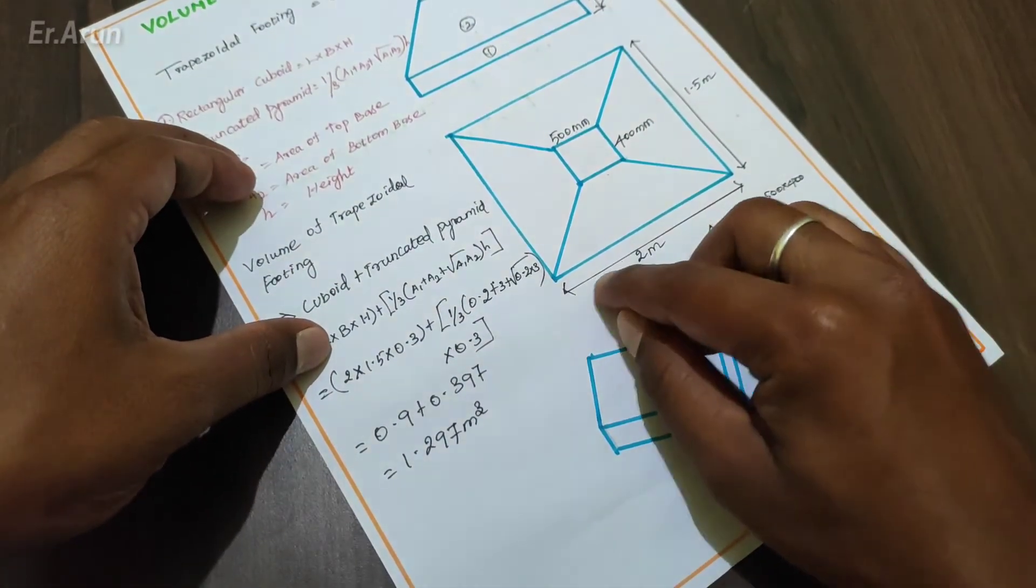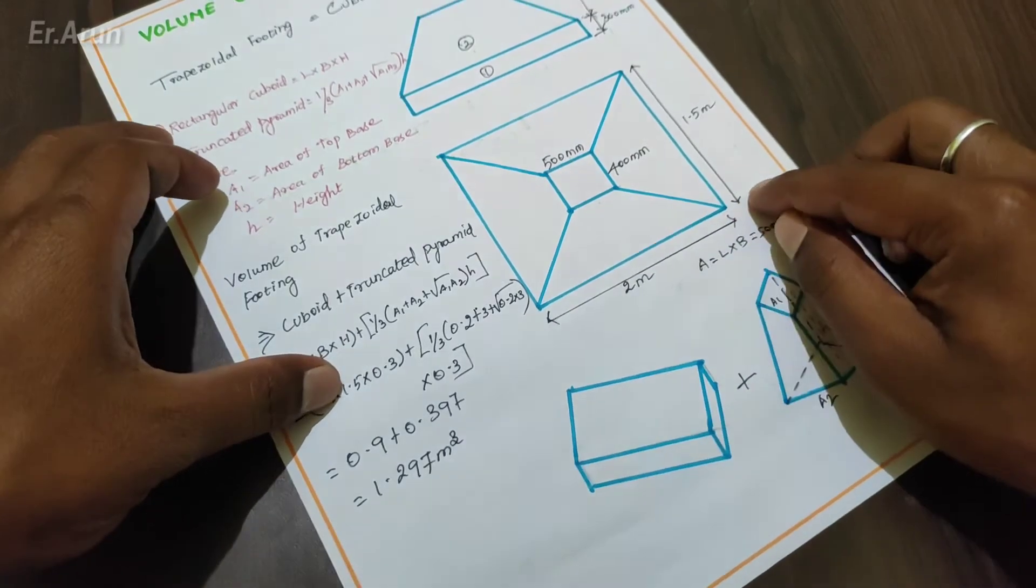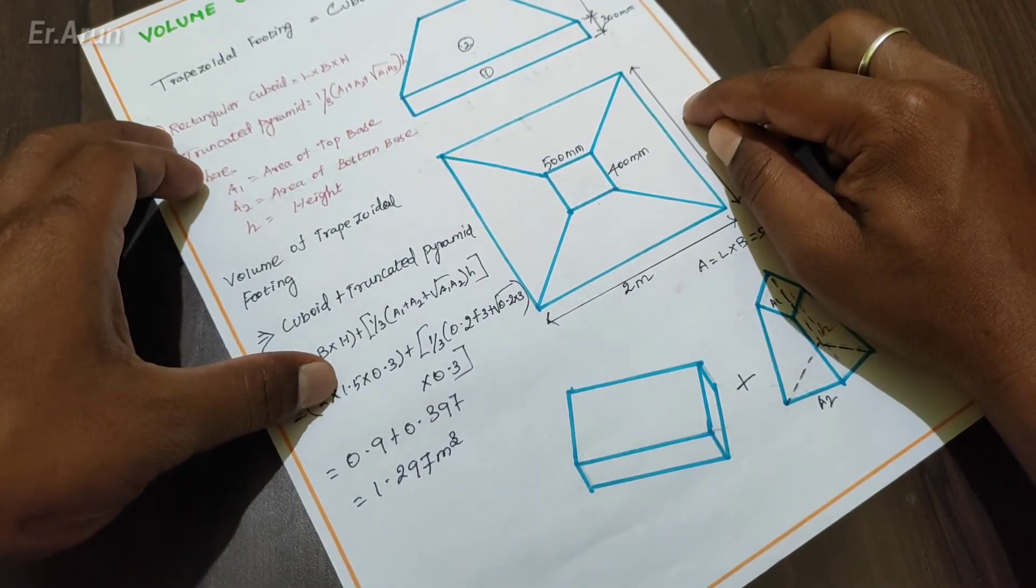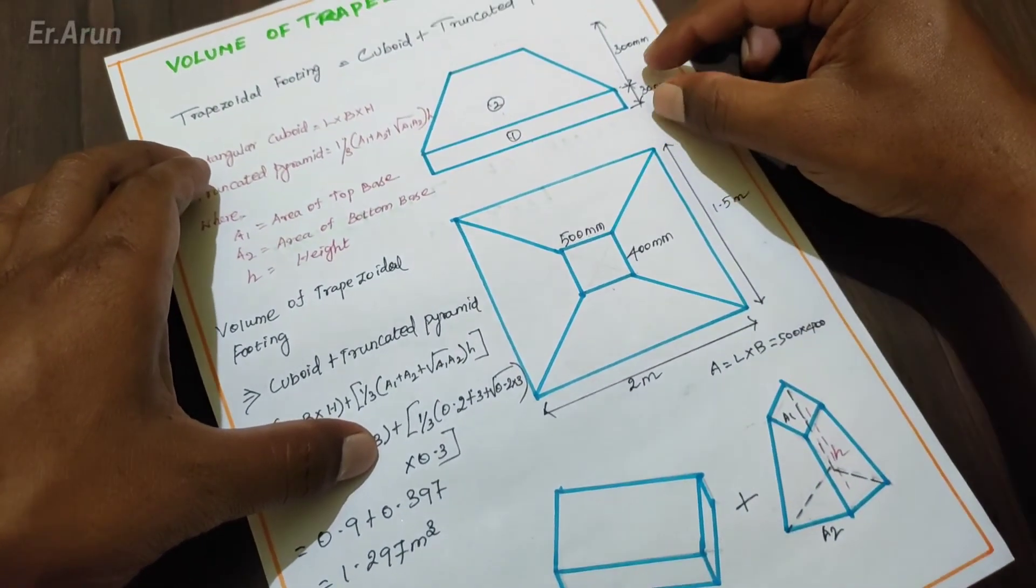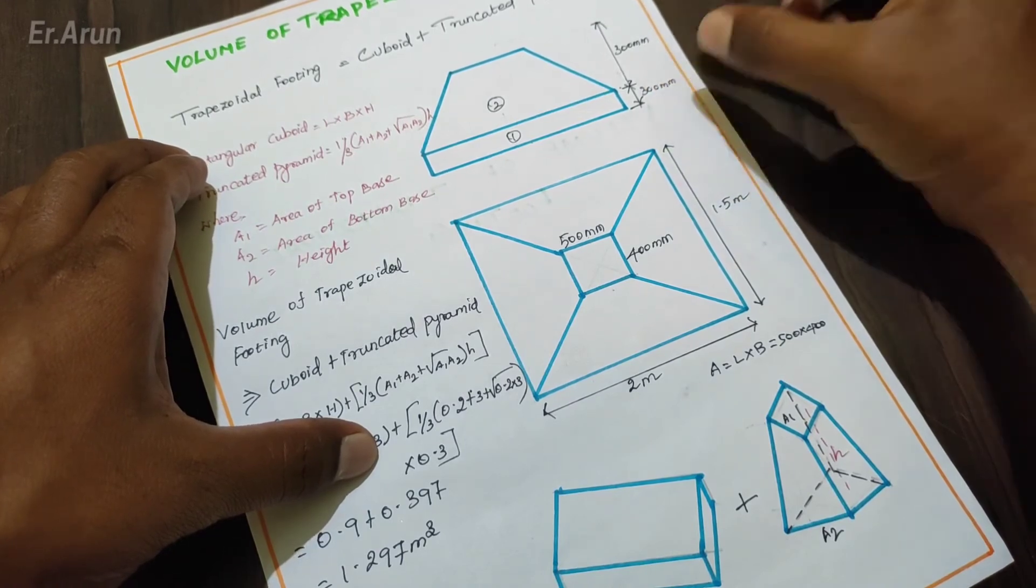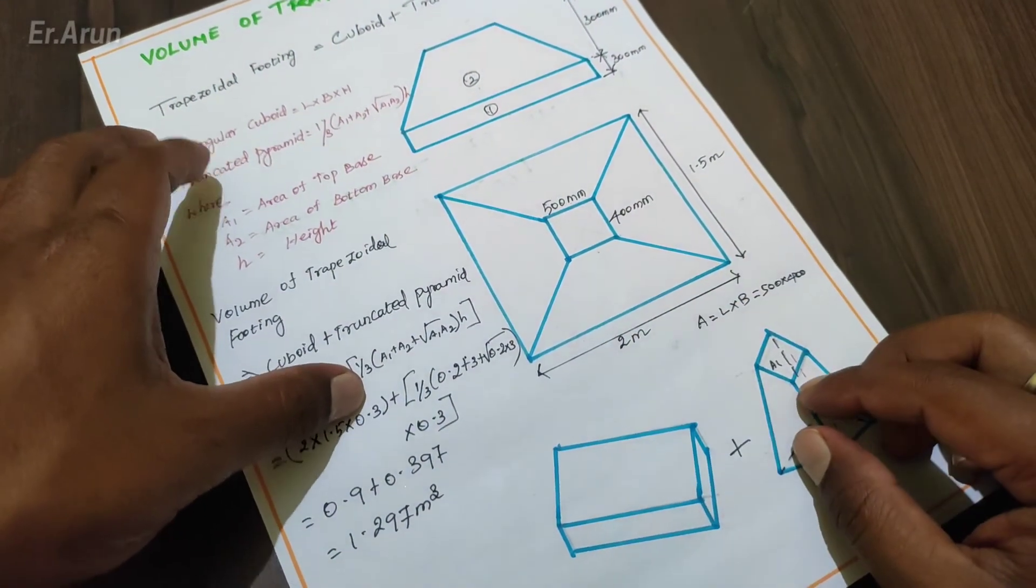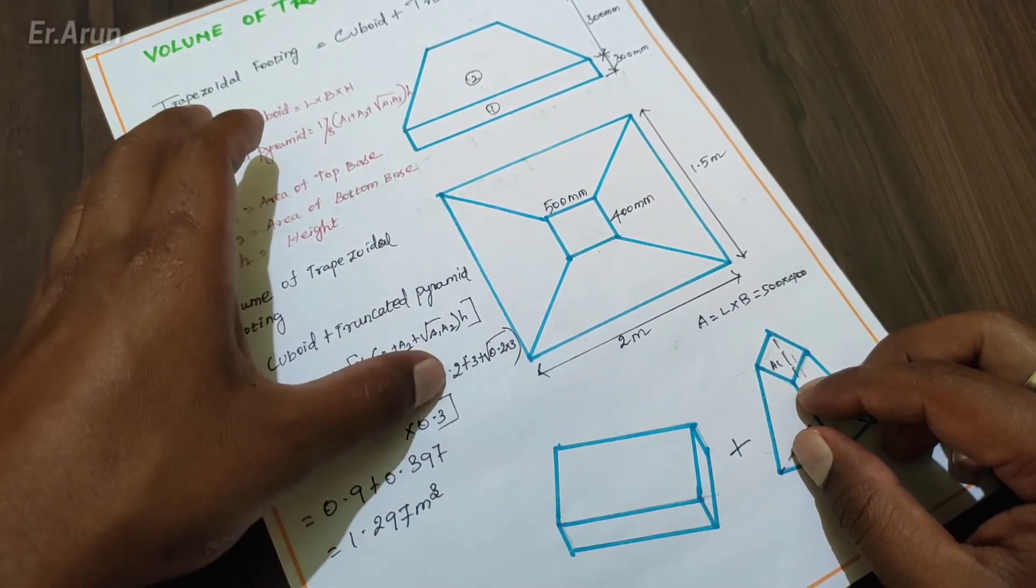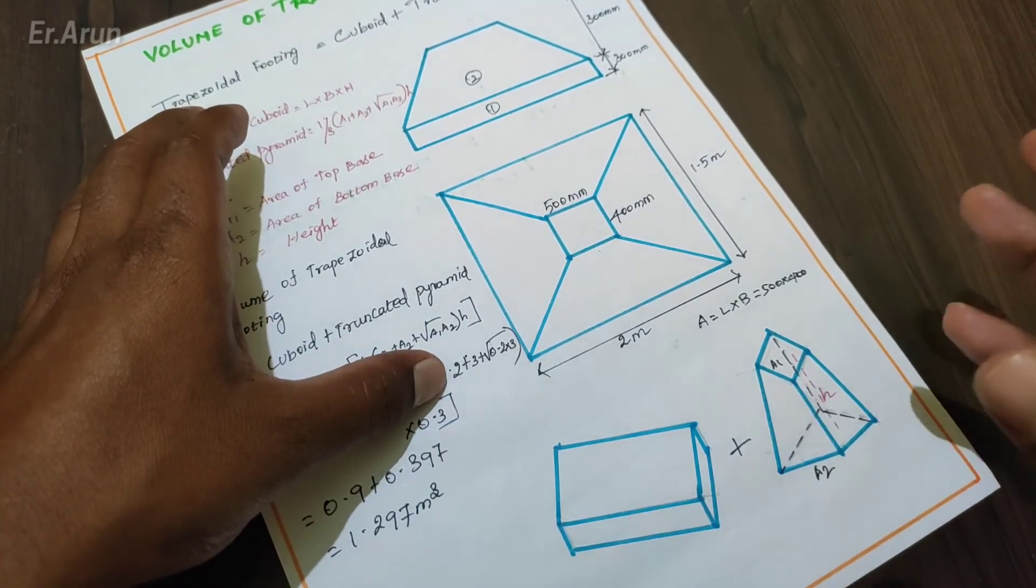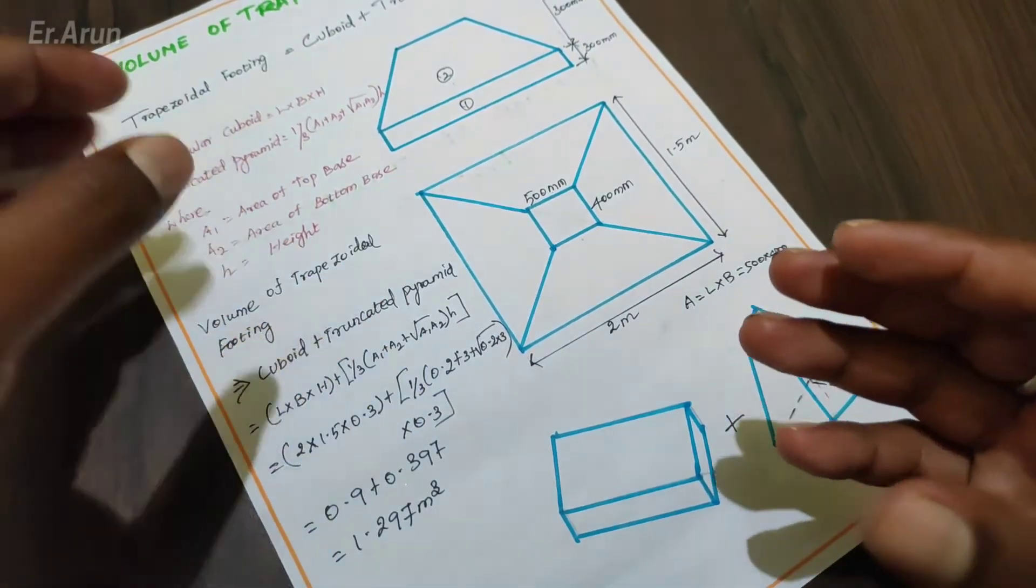The length is 2m, the breadth is 1.5m. Here we have the height, 300 mm. In meters, that's 0.3m. Here we need 100 mm. Also, here we have a truncated parameter. We can apply the values.